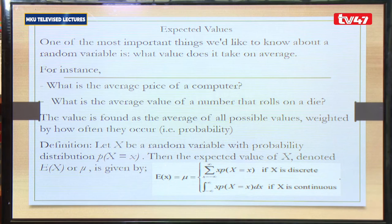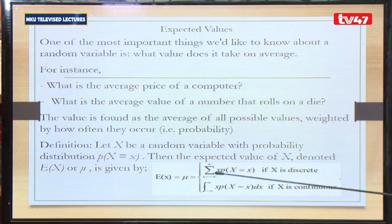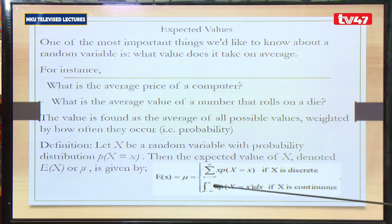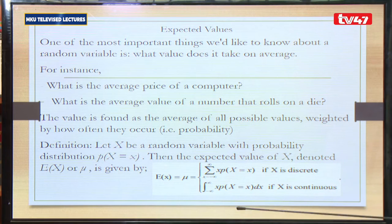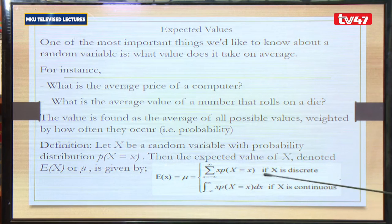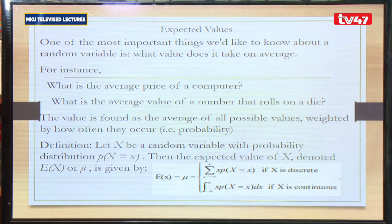We define expected value for both the discrete and continuous cases. For a random variable x, the expected value is given as the summation over all values of x of the random variable itself multiplied by the probability. For the continuous case, we integrate x multiplied by the PDF of x. We talk of a summation of all x multiplied by the PMF for discrete, and an integral of x multiplied by the PDF of x for continuous.